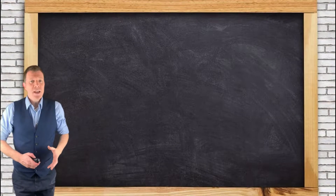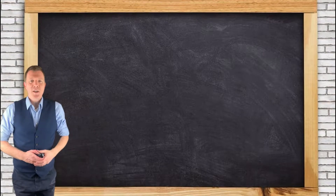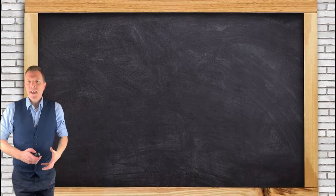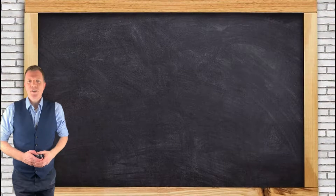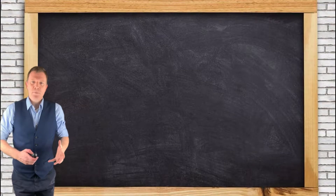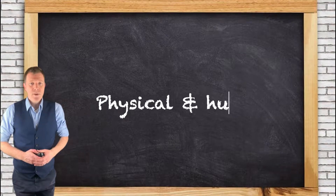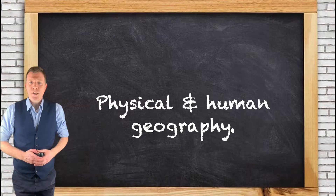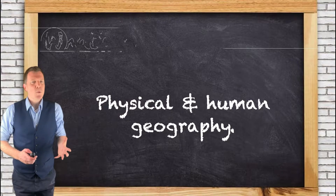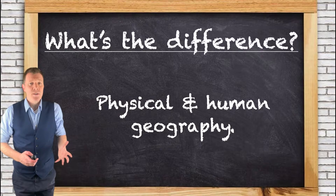Geography covers many, many fascinating topics, and we can categorise these into different types of geography. For example, there's physical geography and there's human geography. But what's the difference?